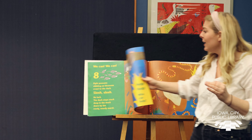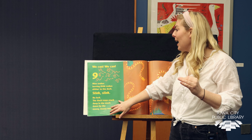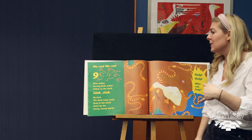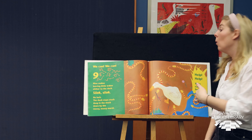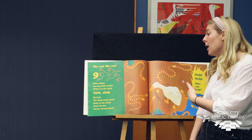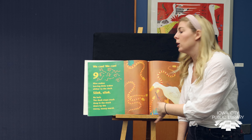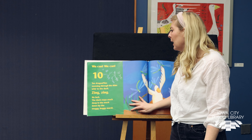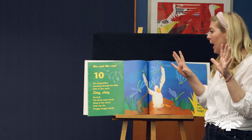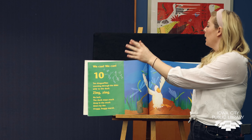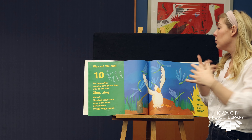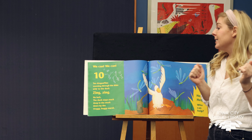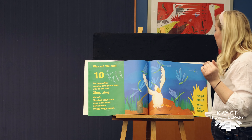Help, help. Who can help? We have nine. Show me at home — nine. Nine snakes, leaving little wigs, slither to the duck — slink, slink. No luck. The duck stays stuck deep deep in the muck, down by the messy, mossy marsh. Help, help. Who can help? We can, we can. Ten dragonflies. Can you guys make some dragonflies at home? Kind of like butterflies. Ten dragonflies zooming through the skies, zoom to the duck — zing, zing. No luck. The duck stays stuck deep in the muck, down by the muggy, buggy marsh.